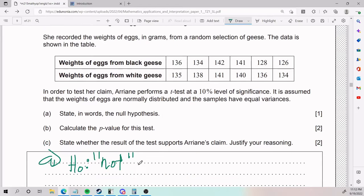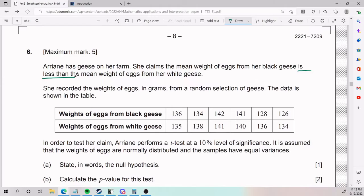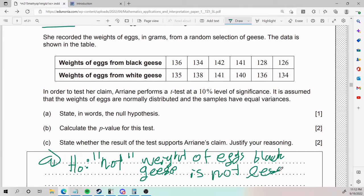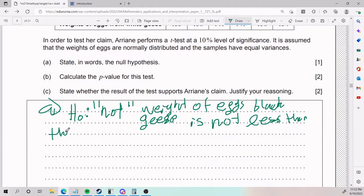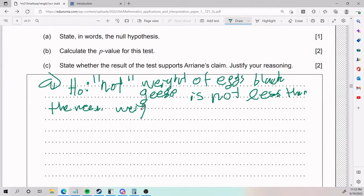So with the idea of not, we're going to say weight of eggs black geese is not, notice that here it's less than, I'm here putting is not less than the mean weight of eggs from the white geese.